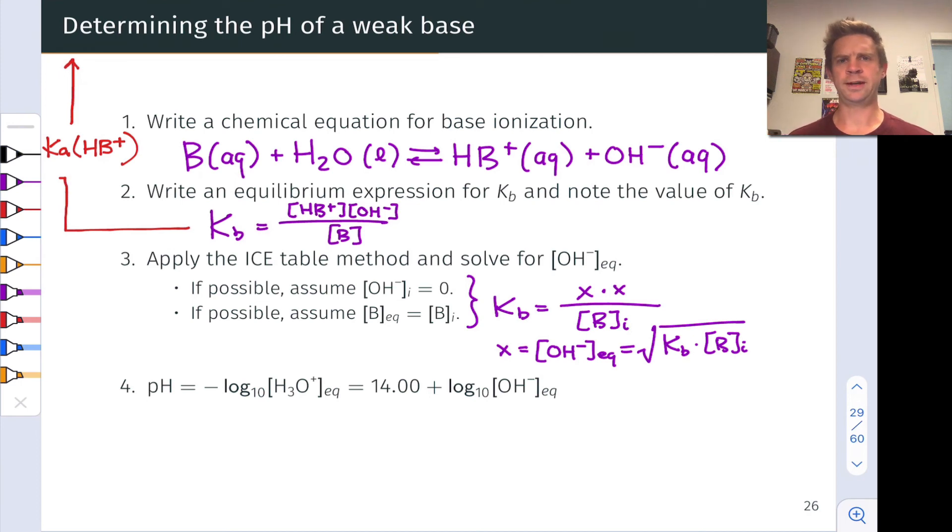I think the easiest way to proceed to find pH here is to realize that pH plus pOH must equal 14. So we can, for example, calculate the pOH first, and then subtract that from 14 to find the pH.